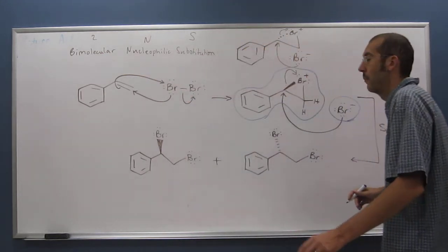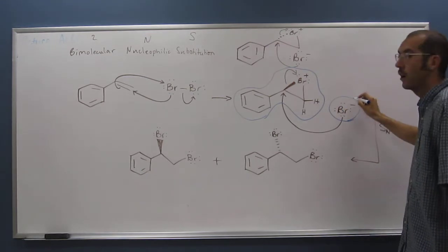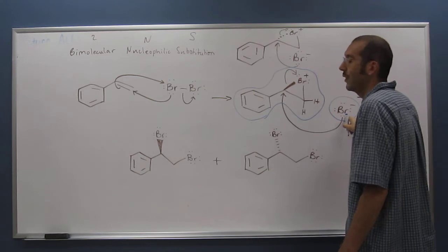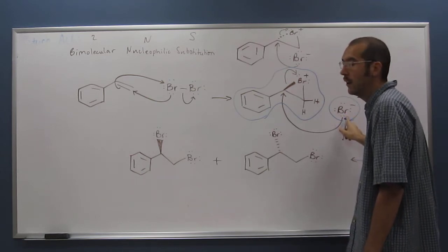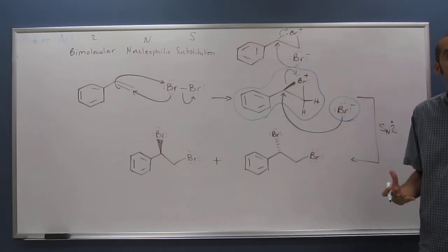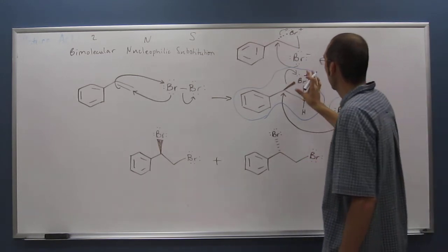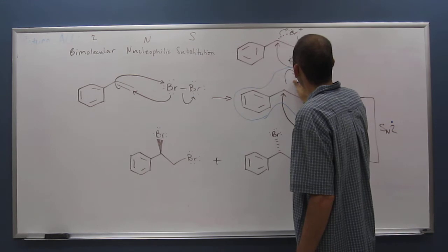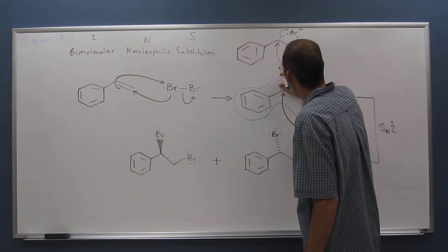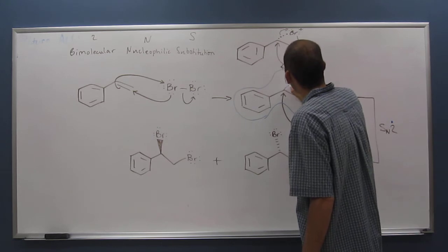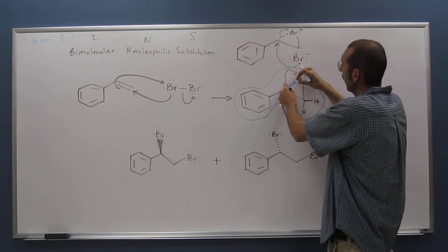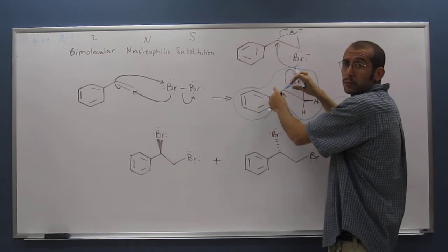Why? Because we've got this Br minus being a nucleophile. Nucleophile means I love nucleuses. It's got a lot of negative charge, and nucleus has a lot of positive charge, especially this one, because if you think of this bromine-carbon bond here, it is very polar.